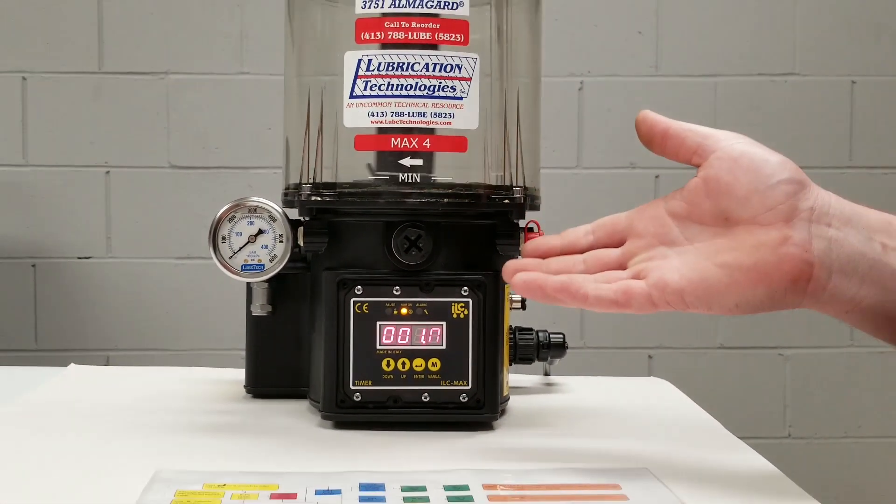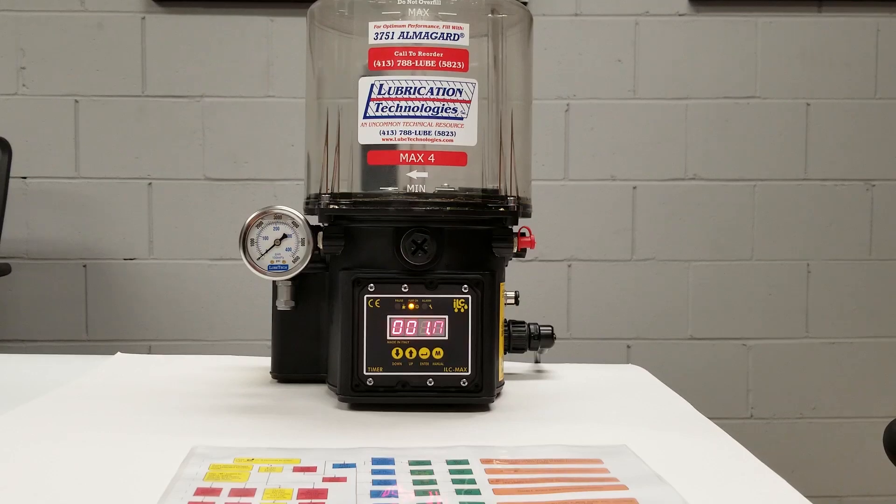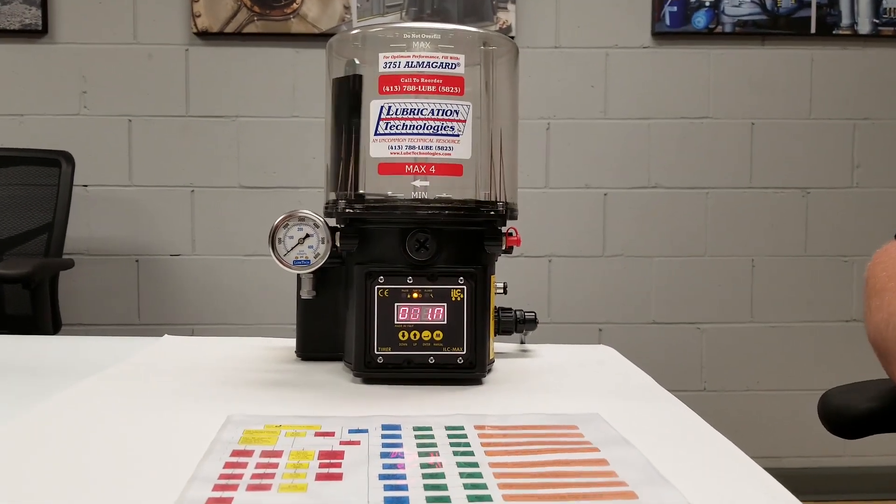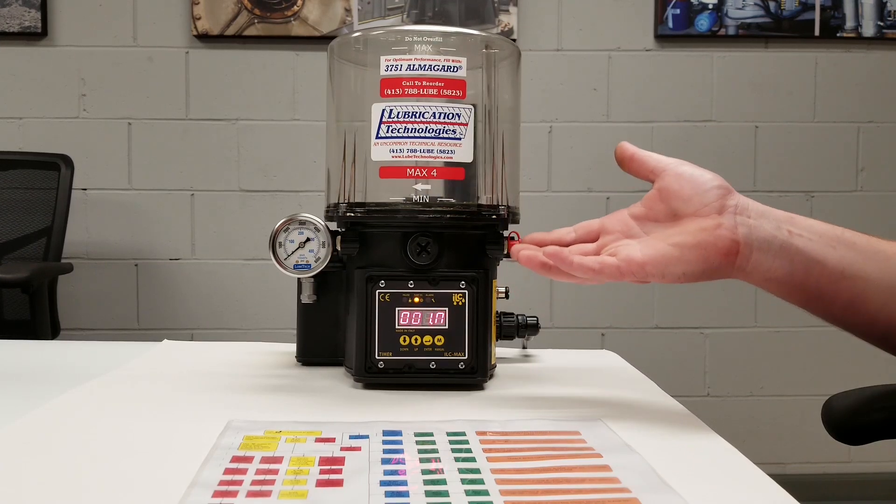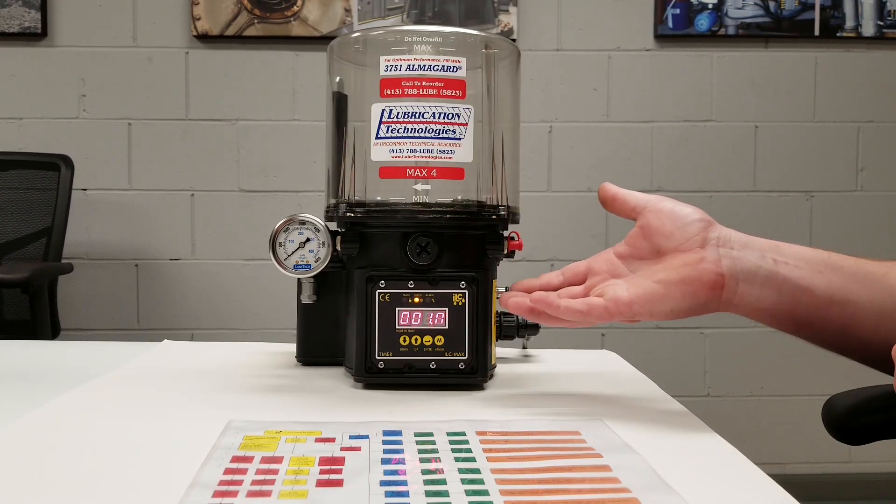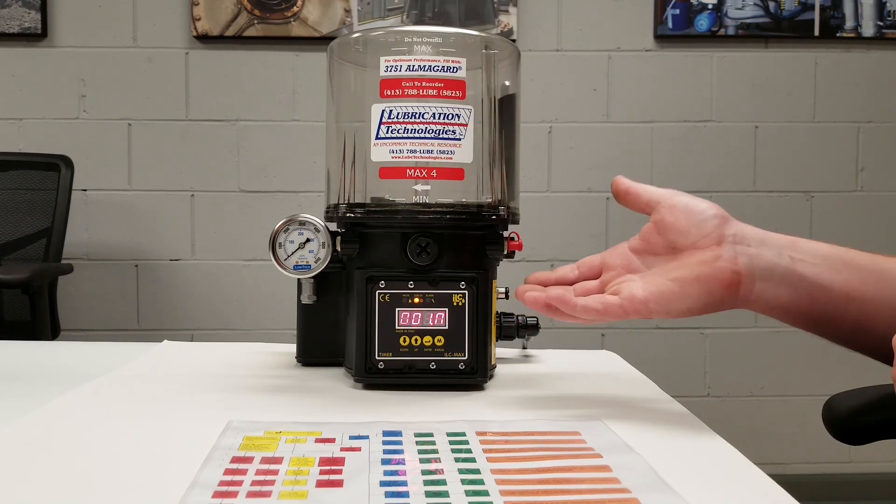And our pump is going to go ahead and count down through the one minute and 30.5 seconds that we have now programmed in for our on time. Once that time has been exhausted, you'll see an eight minutes pop up on the display screen. And that will be our pump going back into the delay time again.